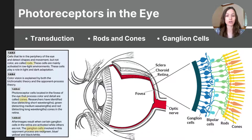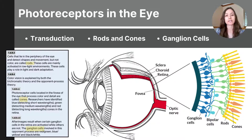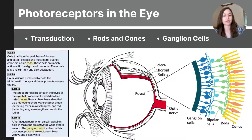Here are a few important takeaways: rods and cones convert light into electrical signals — this is called transduction. Rods detect light in grayscale and can operate in low levels of light, helping us with peripheral vision. Cones are located in the center of the eye and are responsible for detecting color and clarity. Electrical signals are sent from the rods and cones to the bipolar cells, which send the message to the ganglion cells, and then it's processed through the optic nerve to the brain for interpretation.